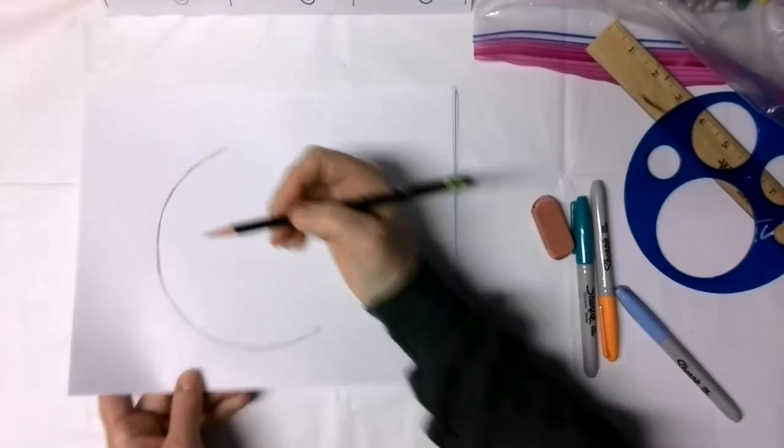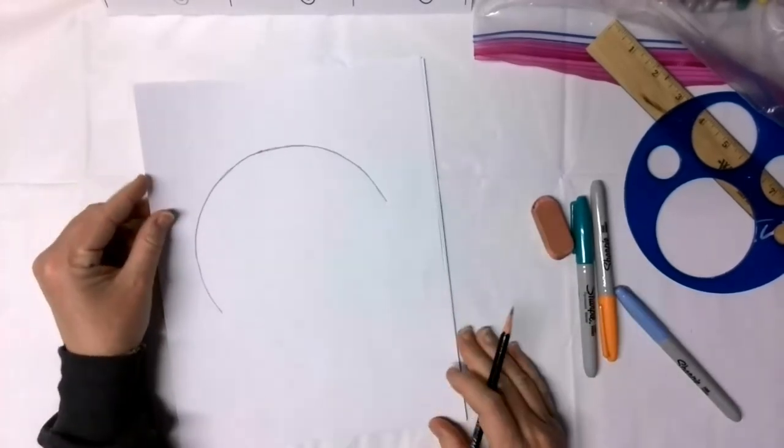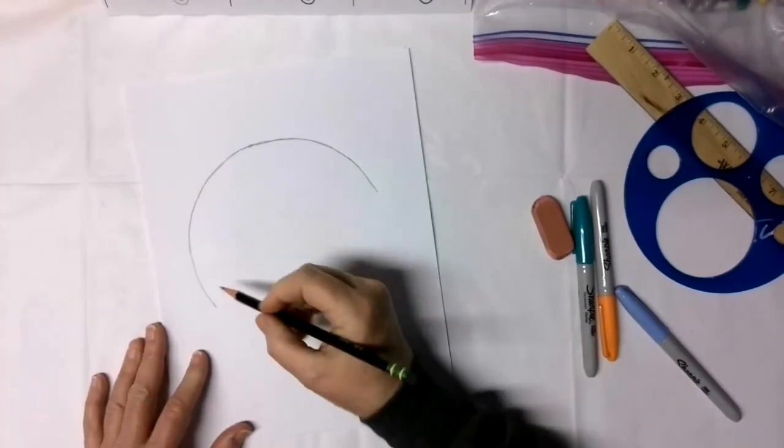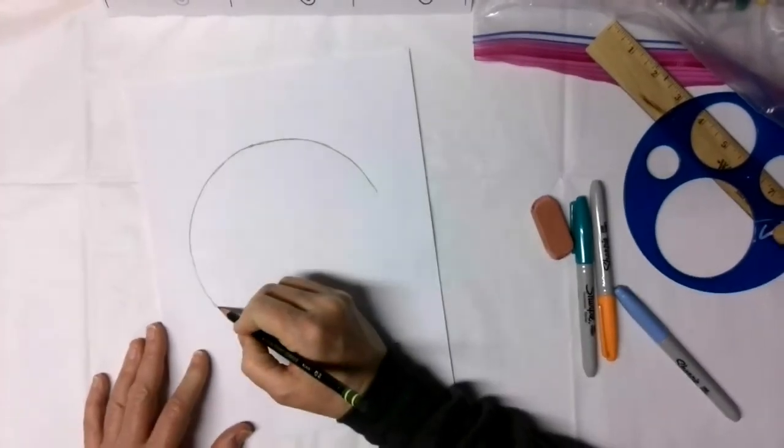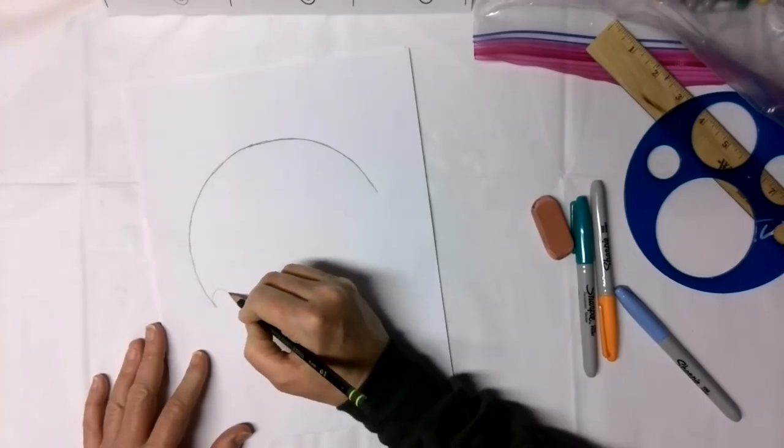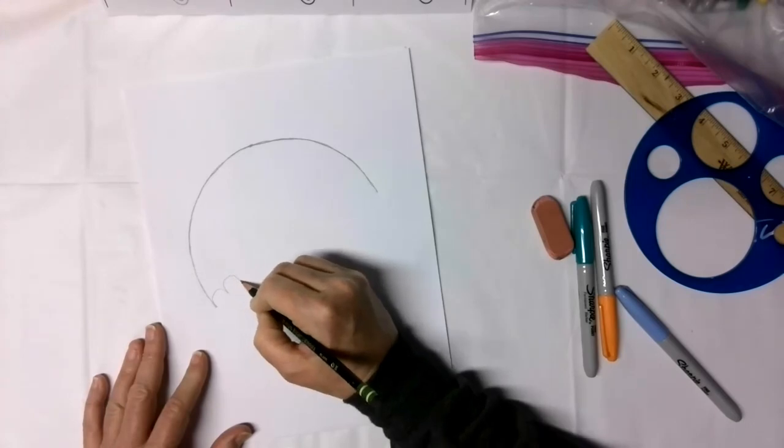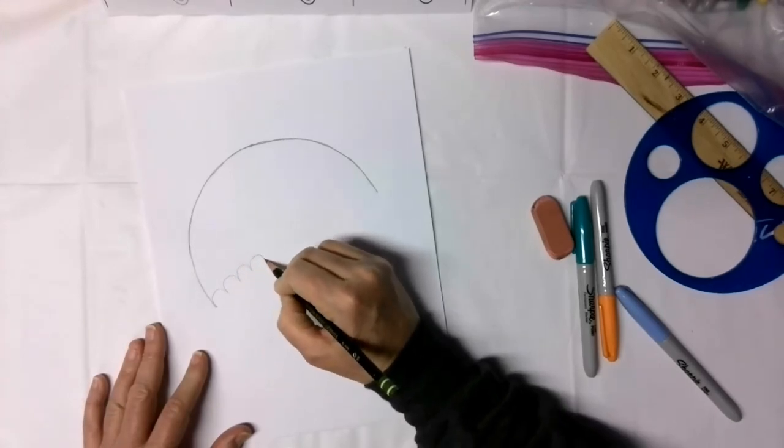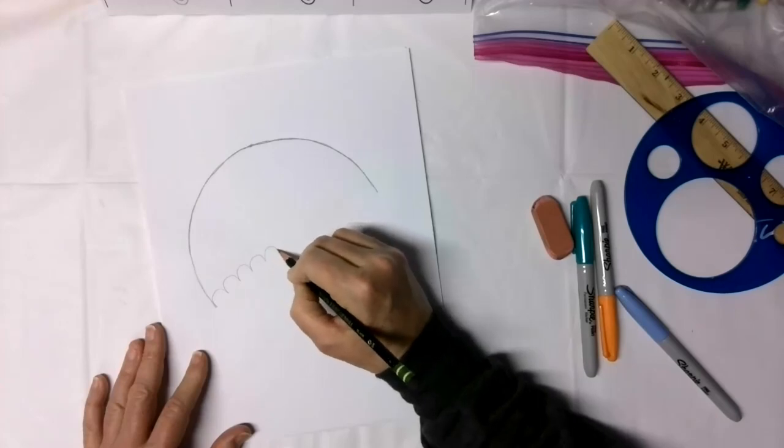So there's my half circle. I'll go over it again and make it a little bit darker for you guys to see. So I draw mine in two parts. And then we're going to start the little edging.